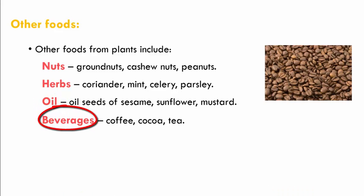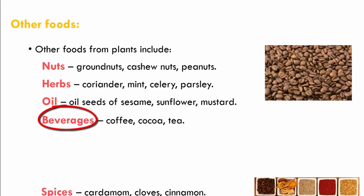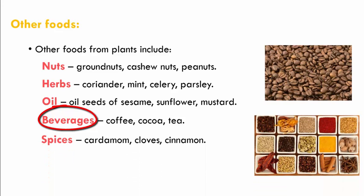Beverages such as coffee, cocoa and tea are obtained from coffee beans, cocoa beans and tea leaves. Spices such as cardamom, cloves and cinnamon are also obtained from plants and give flavor to our food.